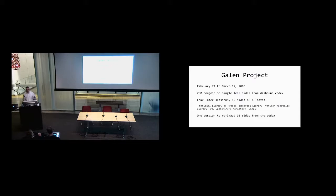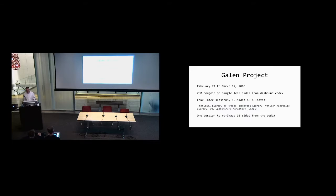So what's the structure of these websites? I'm going to focus on the Galen project, the second project we worked on, and how we constructed that data set. I'm mostly going to focus on the initial data set from the 2010 imaging sessions that took place from February 24th to March 12th of that year. We did 230 conjoined single leaf sides from the disbound codex. There were 115 conjoins or single leaves, and we imaged each side of each one.